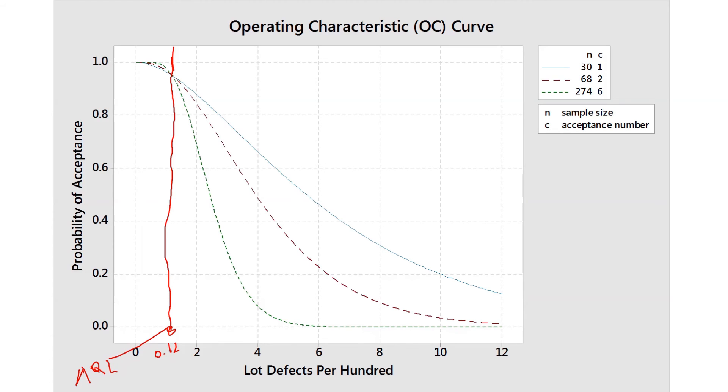So this is the 0.95 level, 0.95. So this is the same producer, producer risk 0.05, and you can see three different operating characteristic curves, three sampling plans.